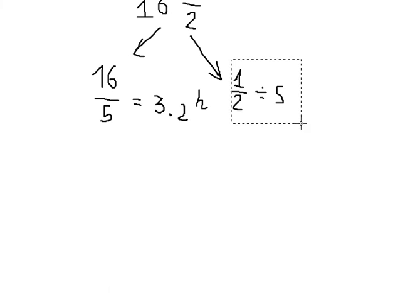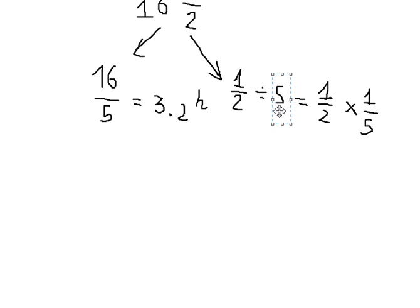For the second one, 1/2 divided by 5 equals 1/2 multiplied by 1/5, because 5 equals 5/1. Since this is division, we can swap the numerator and denominator to get 1/5 to multiply. That equals 1/10.